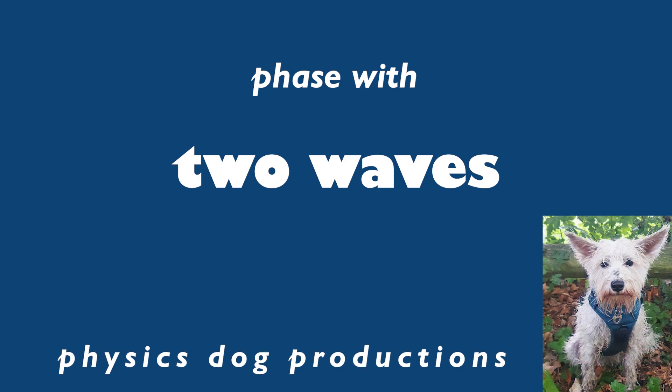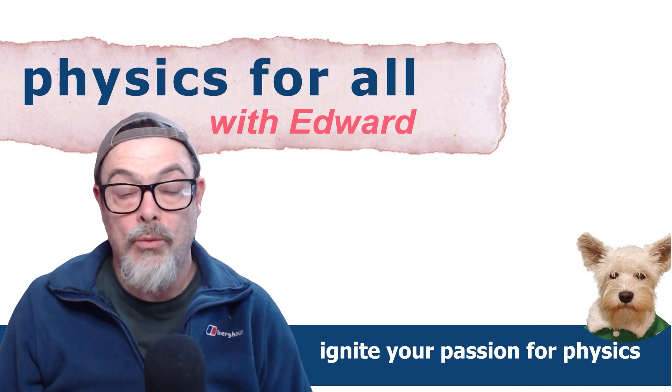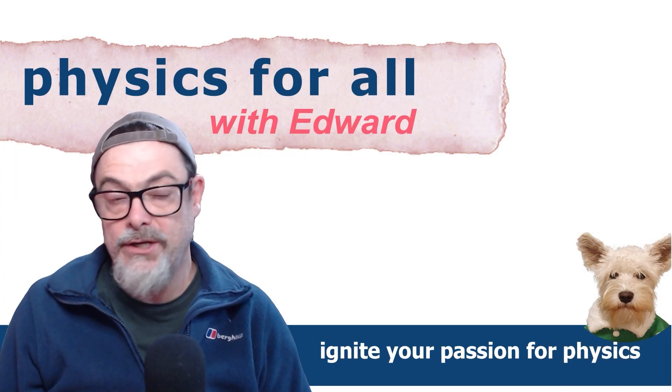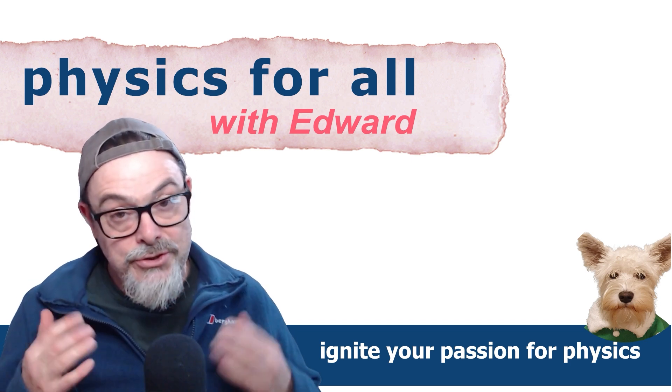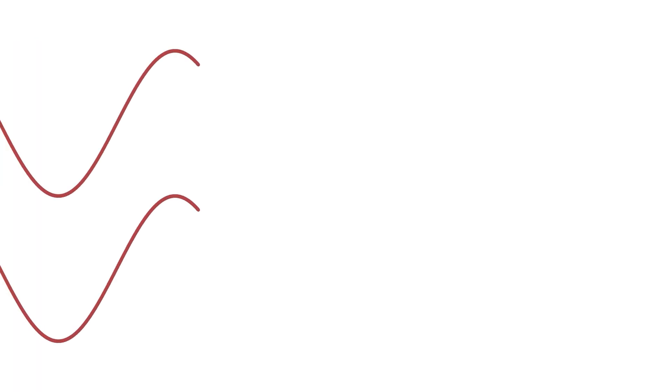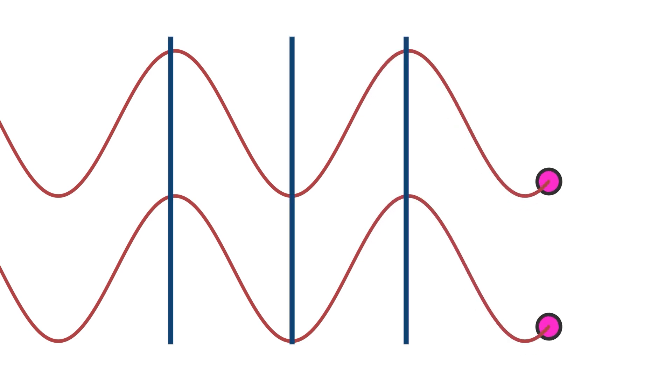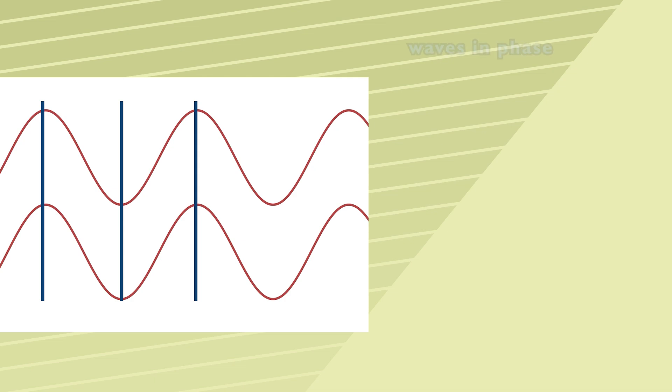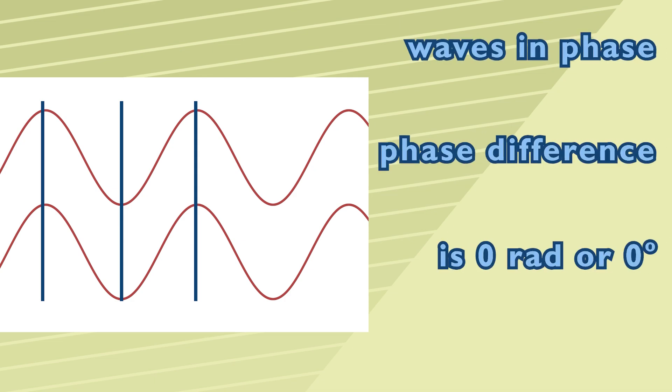Now that we've considered the phase difference for points along one wave we're going to introduce a second wave and consider the phase difference between the two waves. This is a load easier. These two waves show peaks and troughs that are perfectly lined up. The construction lines cut through identical points on each wave. There is no phase difference between these waves.